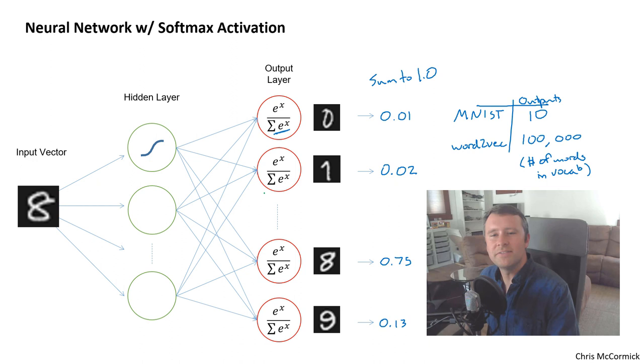So negative sampling, without going into too much detail, addresses this by essentially giving up on the softmax behavior. We get rid of the softmax activation function and go back to just our trusty old sigmoid function. And essentially, the model, instead of becoming 100,000 outputs that are all interdependent, we end up with essentially 100,000 logistic regression classifiers that are all independent of each other. And when we train on a particular input word, we train the output word as the positive sample. And then we randomly choose five other words to use as our negative samples. So instead of training on 100,000 outputs, we just train on six. So negative sampling loses that softmax behavior. But the real point of this, the real point of the word model, is to learn good word vectors. And negative sampling seems to work. It produces good word vectors.